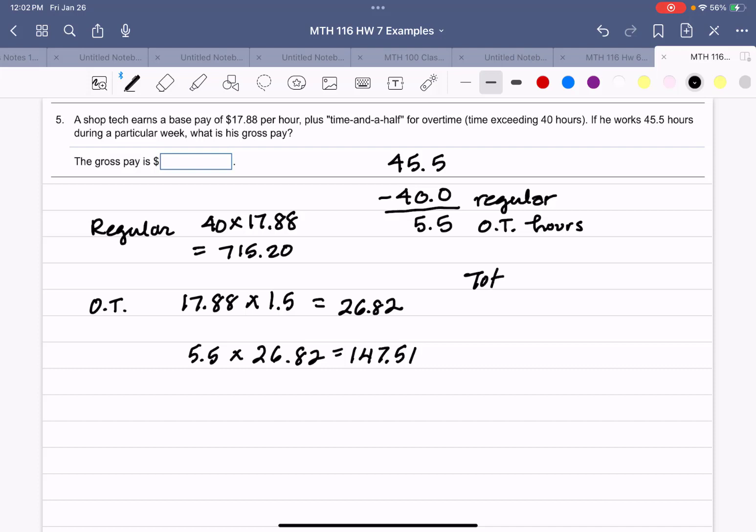So the total pay will be the regular pay, $715.20, plus the overtime pay, $147.51. So that's going to be a total of $862.71. So the gross pay is $862.71.